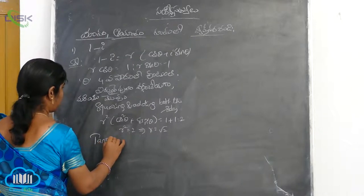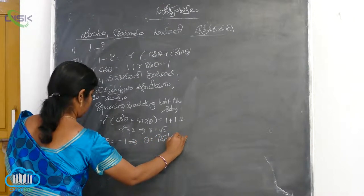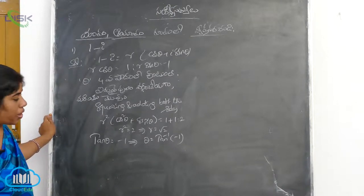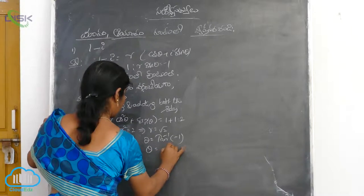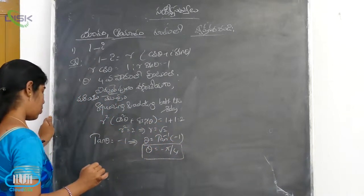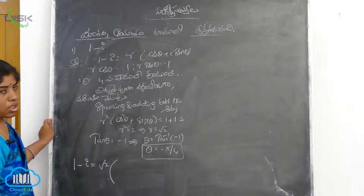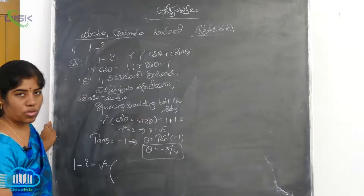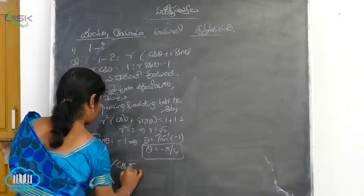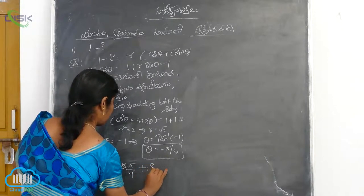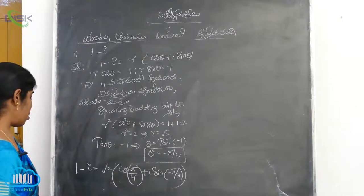Now we take tan theta. Tan theta equals minus 1, so theta equals tan inverse of 1. From the trigonometry table, tan 45° equals 1, and 45° is pi by 4. So theta equals minus pi by 4. The final conclusion is: 1 minus i equals root 2 into cos(minus pi/4) plus i sin(minus pi/4).